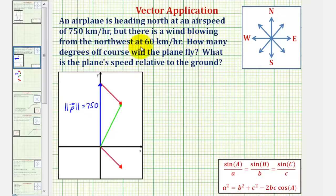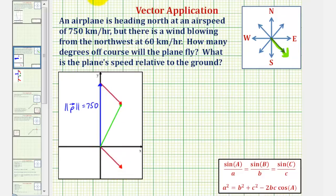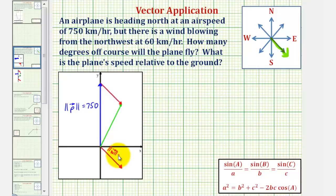Next, the wind is blowing from the northwest at 60 kilometers per hour. So if the wind is blowing from the northwest, it's actually blowing in the direction of southeast. To represent the wind, we can use this red vector, with the initial point at the origin. Notice how it's pointing in the direction of southeast, and because it's blowing 60 kilometers per hour, if we call this vector w, the magnitude of vector w is equal to 60.